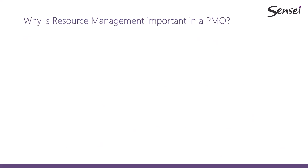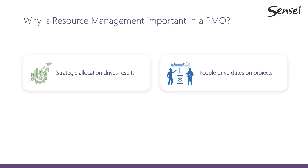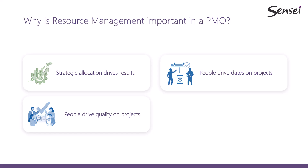Resource management is important for any PMO, but especially for one that is implementing a PPM solution. From a top-down perspective, it helps ensure strategic allocation of people to the projects that drive results — those that align with the strategic goals of the organization. This is particularly important in larger organizations with lots of projects and people. The number one driver of dates on projects is people. Having people allocated sufficiently to get the job done ensures timely delivery. Related to that is having the right people allocated to get the quality we're looking for. And with a good understanding of the pipeline of work as well as the resource requirements, we're able to better forecast what our needs are and plan staffing and hiring accordingly.